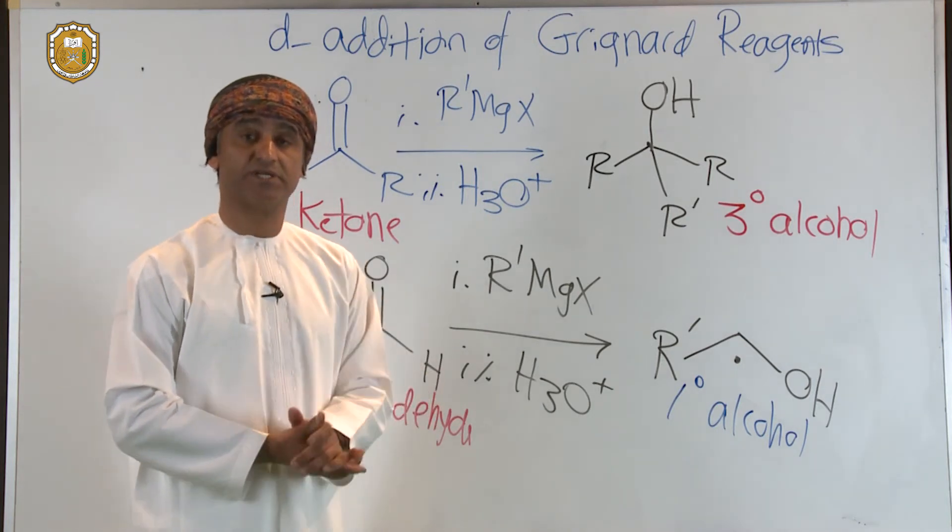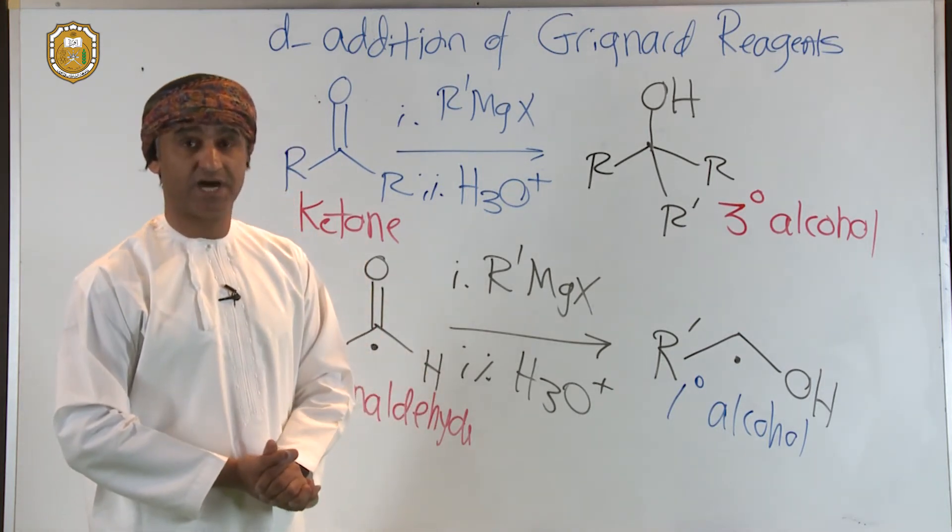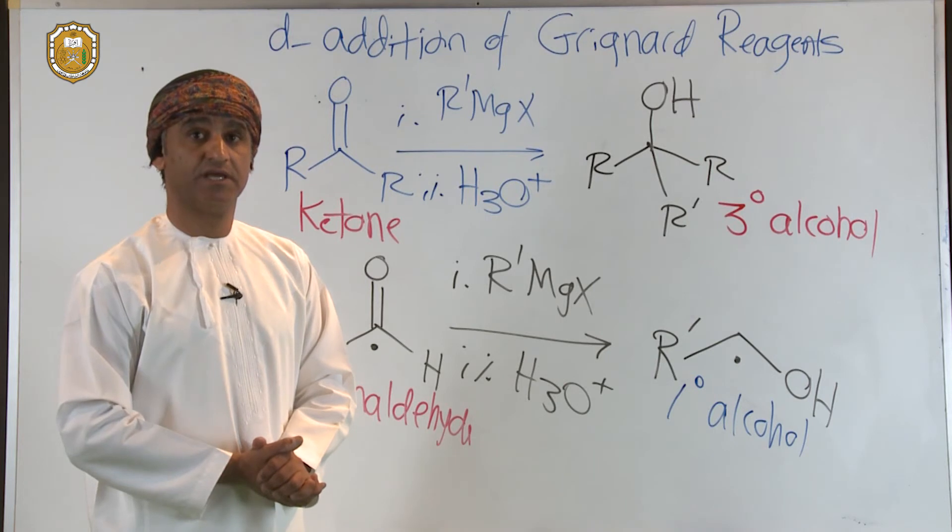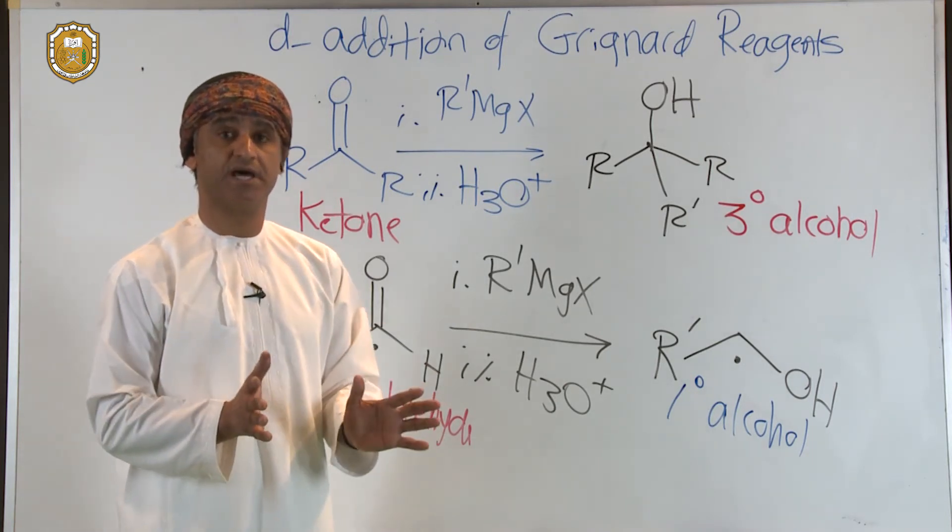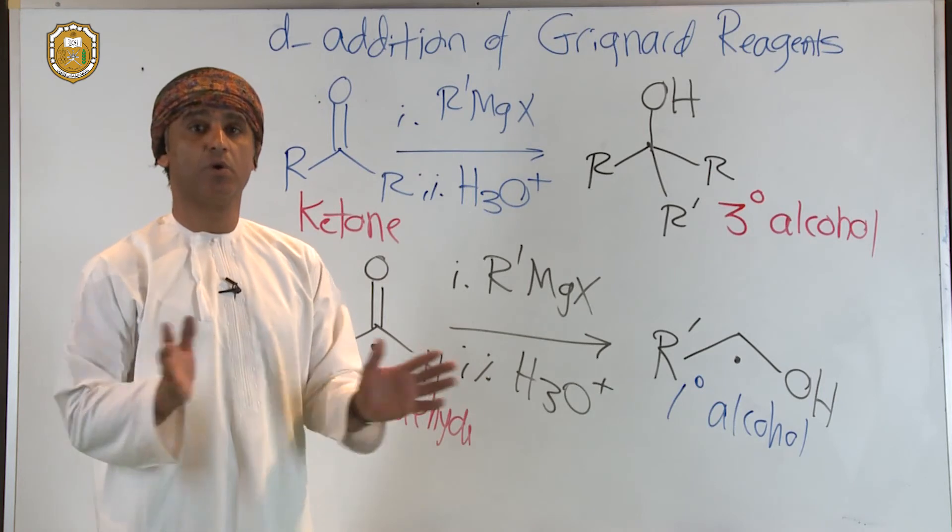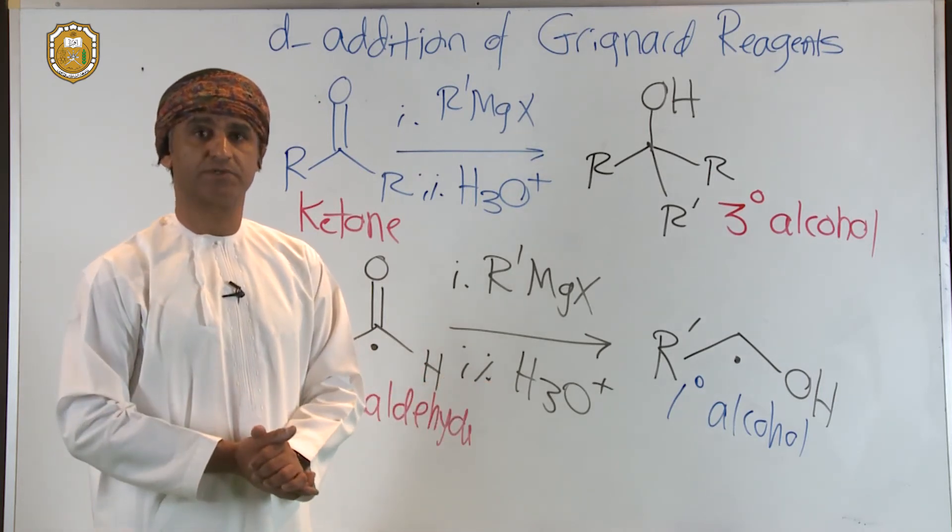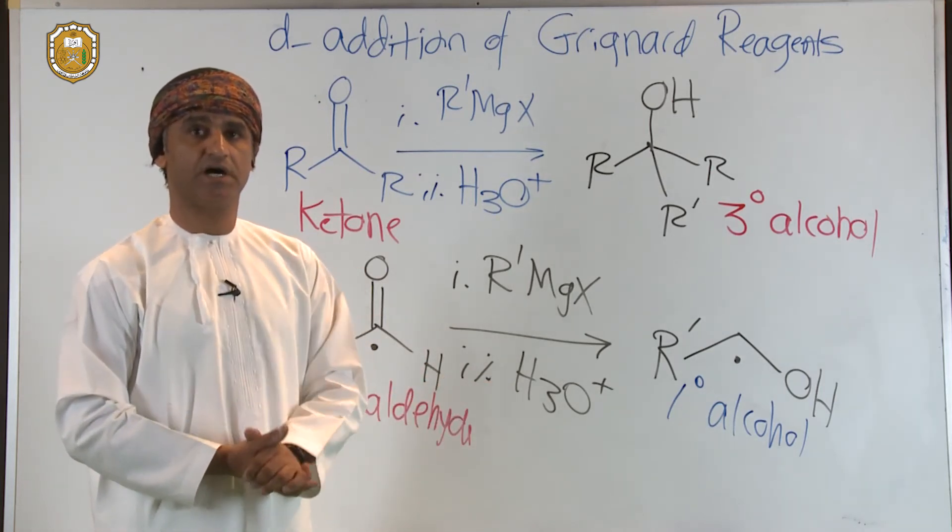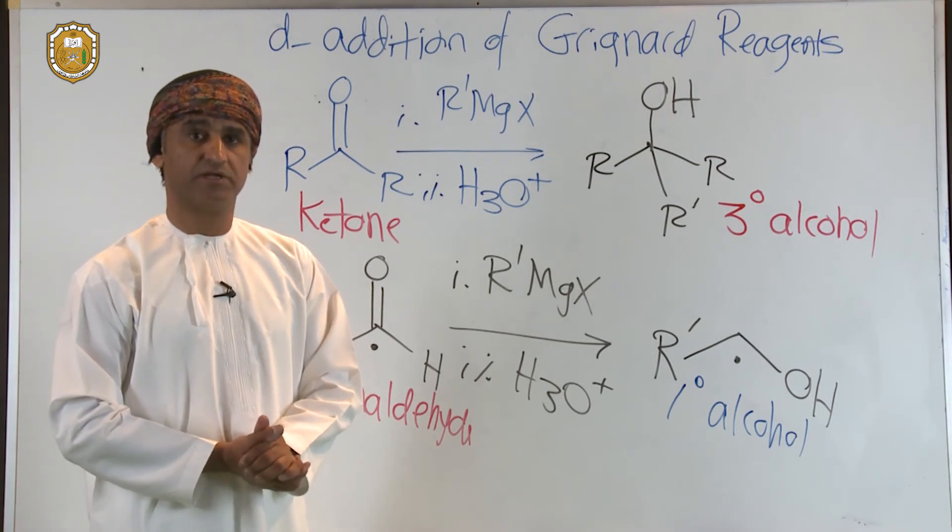We've seen before that Grignards also react with aldehydes to give the corresponding secondary alcohol. Therefore, in conclusion, we can actually make all kinds or all types of alcohols using the Grignard chemistry or utilizing nucleophilic addition reactions of Grignards on carbonyl compounds.